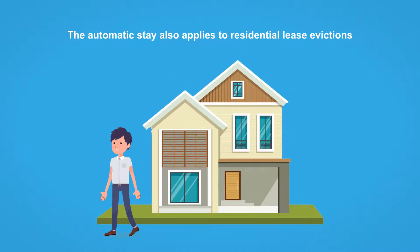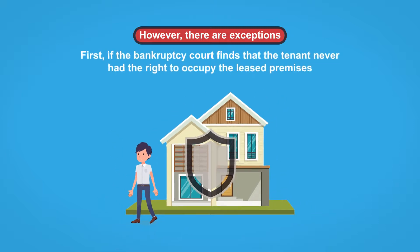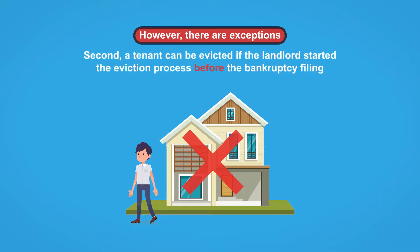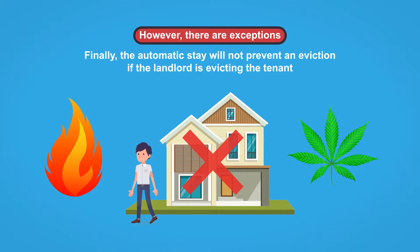The automatic stay also applies to residential lease evictions and protects renters who file for bankruptcy from being evicted from their rental property. However, there are exceptions. First, if the bankruptcy court finds that the tenant never had the right to occupy the leased premises in the first place, then the leased premises never become part of the bankruptcy estate, and the automatic stay will not apply — the tenant is a mere squatter who cannot secure a right to possess property merely by filing for bankruptcy. Second, a tenant can be evicted if the landlord started the eviction process before the bankruptcy filing. Finally, the automatic stay will not prevent an eviction if the landlord is evicting the tenant based on endangerment to the property or the illegal use of controlled substances within the property.